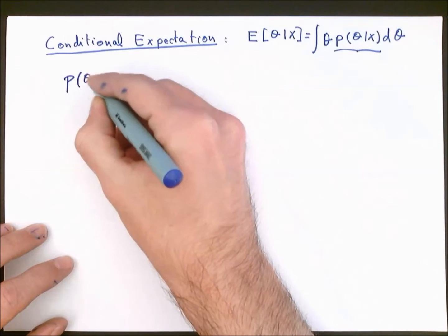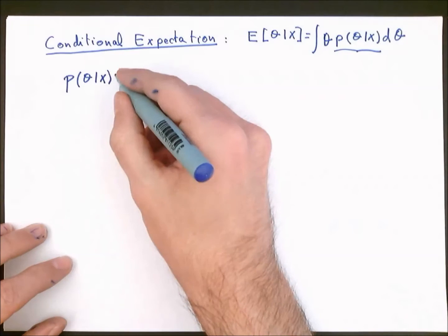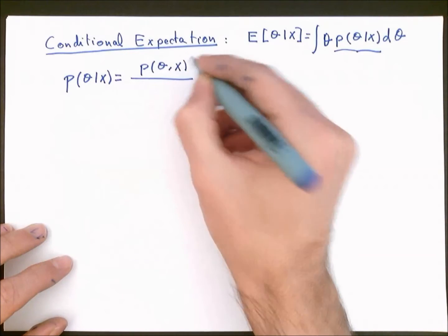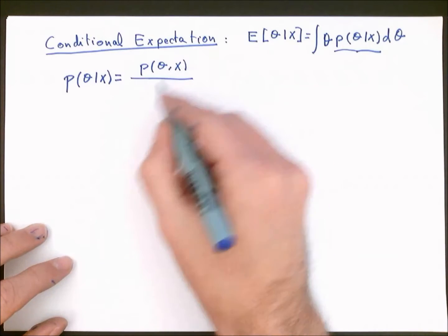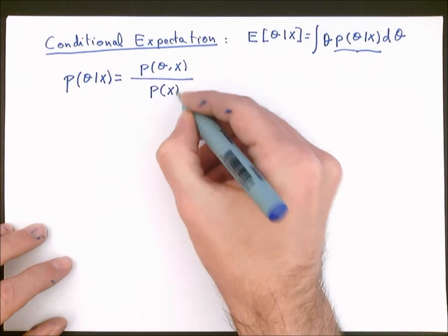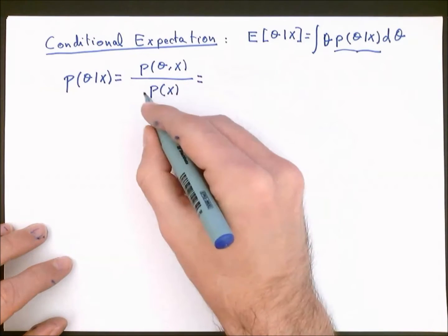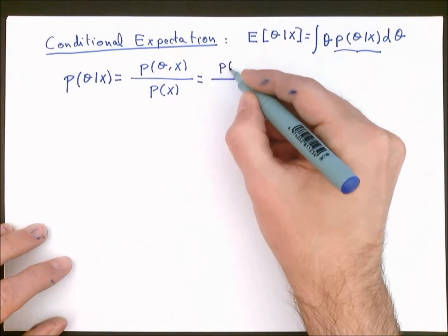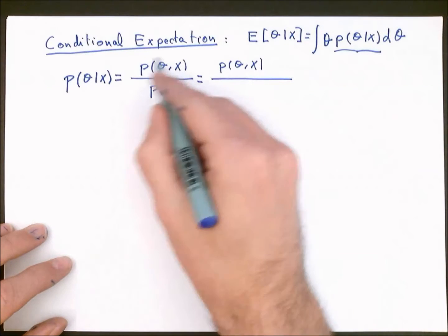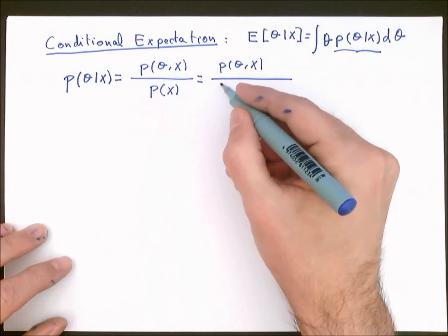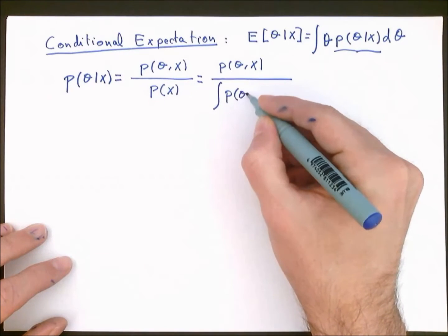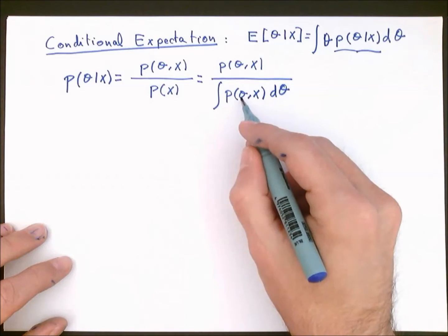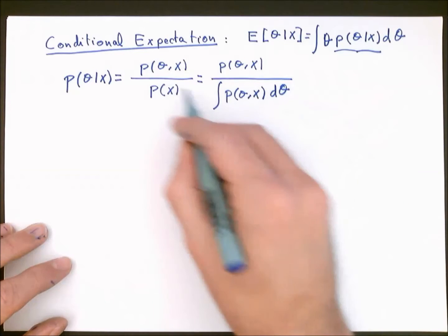We can use Bayes' theorem to compute this posterior PDF as the joint PDF of theta and x divided by p of x. If we don't know the prior distribution of x, we can obtain it from the joint PDF of the unknown variable and the data by marginalizing with respect to theta. Integrating the joint PDF of theta and x over theta gives us the marginal PDF p of x.